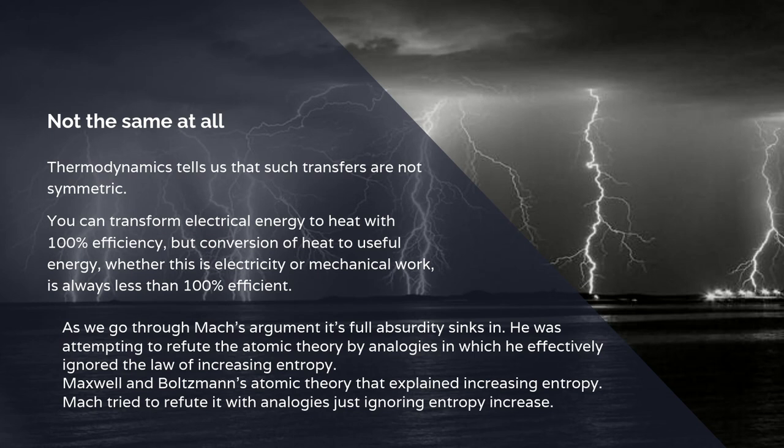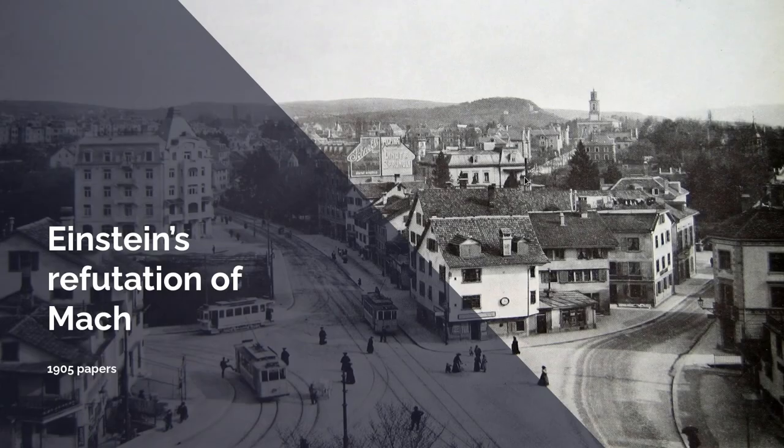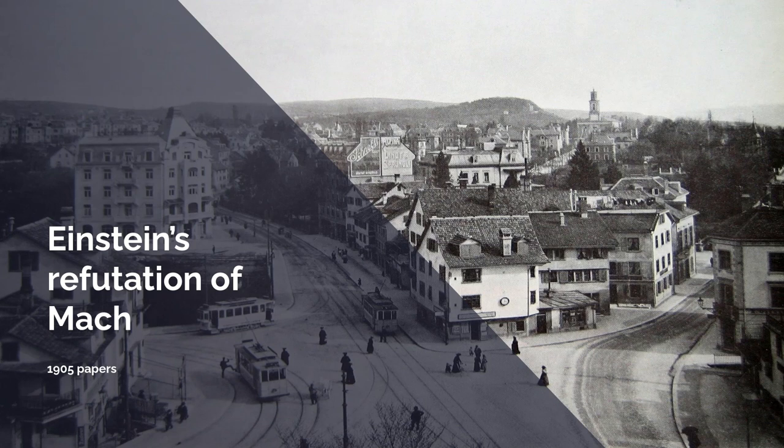But the people he was arguing against, Maxwell and Boltzmann, had a theory which explained that entropy in terms of atomic movement. And Mach is trying to refute it with analogies which just ignore entropy increase. So, this is my 21st century critique of Marx's late 19th century attempts to defend the caloric theory. Let's look at what Einstein said at the start of the 20th century.